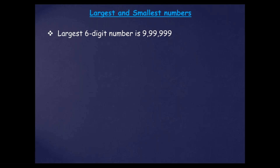The largest six-digit number is 9,99,999. If you see carefully, in this number 9 is given 6 times, so that's why this is the largest six-digit number. Now the smallest six-digit number is 1 lakh. If you see carefully there are six digits in all — with 1, five zeros are given. So the smallest six-digit number is 1 lakh.